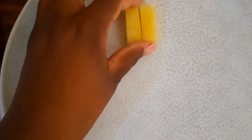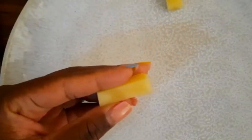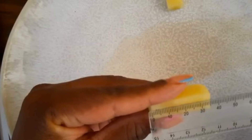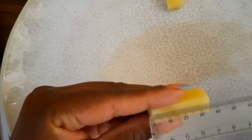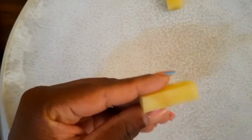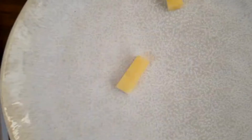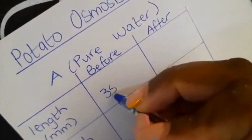First, we'll prepare our potato samples. It's important to cut them into equal-sized pieces to ensure a fair comparison. I've already prepped two here. Next, we'll take our initial measurements of length, width, and height of our samples.